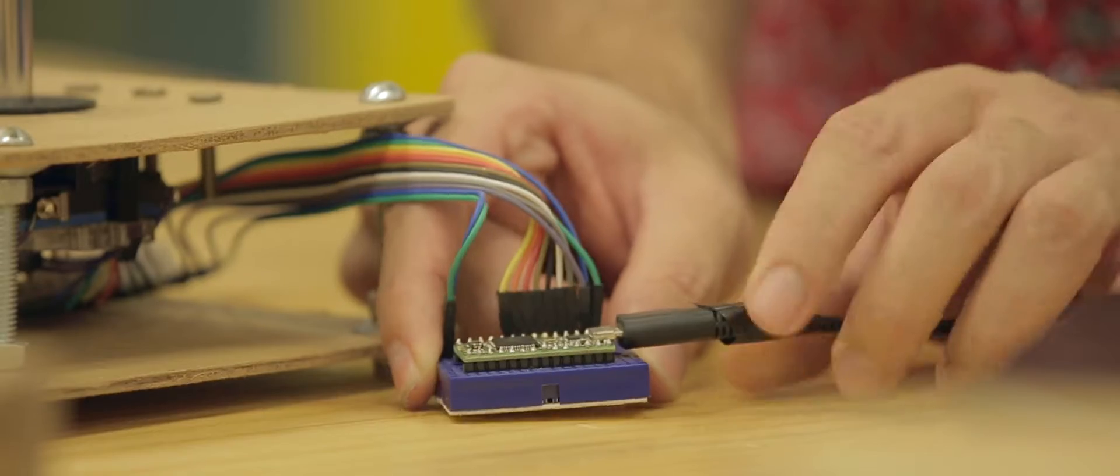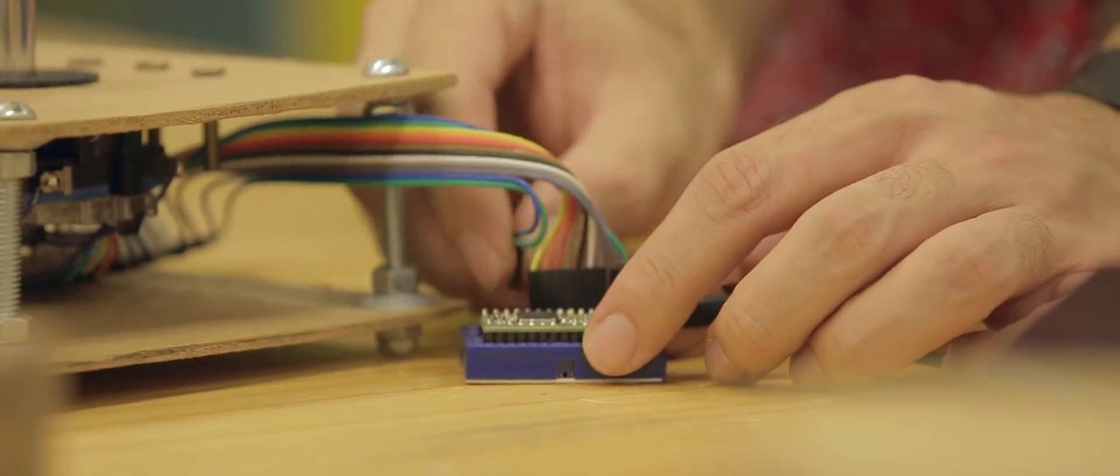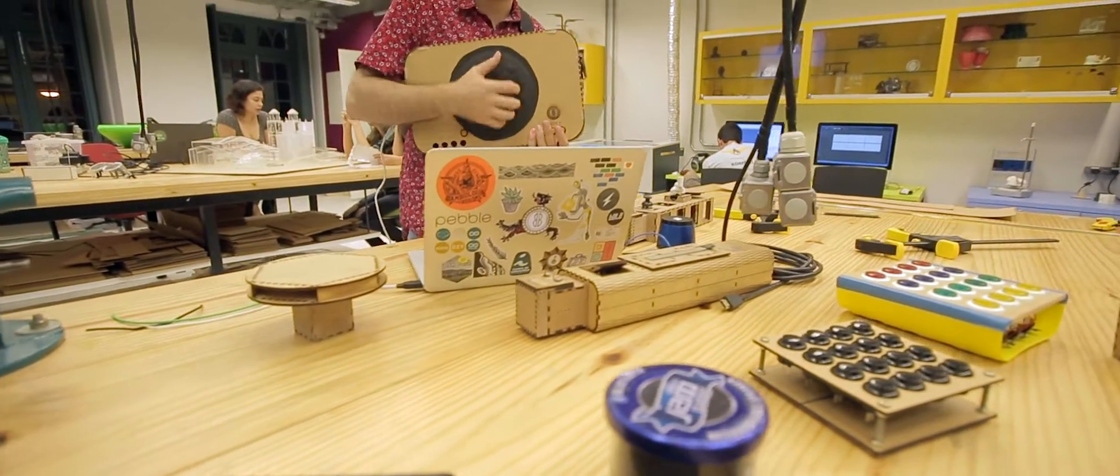Apesar do LOCO ser laboratório de objetos urbanos conectados, ela tem uma malha de fabricação digital, de prototipação eletrônica, que permite que a gente use essa técnica para os fins, por exemplo, de música, que não estaria diretamente ligado a objetos urbanos conectados.